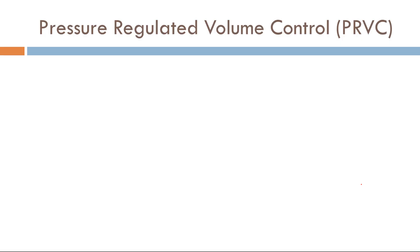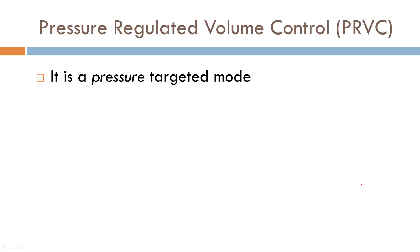So PRVC — do you think it's a flow-targeted mode or a pressure-targeted mode? It's a pressure-targeted mode. And what do you think the cycle variable is? It's time. So the question is, how is PRVC different from pressure-assist-controlled ventilation? Because in pressure control, the target variable is pressure, and the cycle variable is also time.